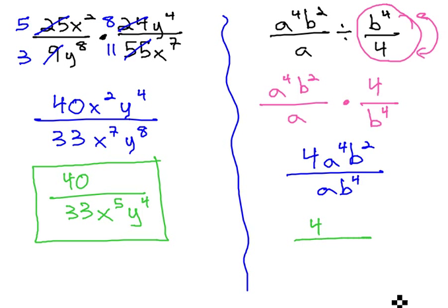The 4 is still in the numerator, and on the a's, when we subtract the exponents 4 minus 1, we get a cubed in the numerator because it's positive. And finally, on the b's, 2 minus 4 is negative 2, telling us the b squared needs to move down to the denominator, and we have our solution.